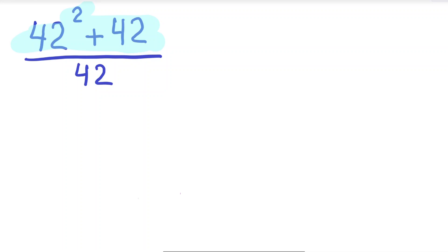A factor is something that is multiplied by the number to get that number. So what is the common factor between 42 squared and 42? Well, let's think: 42 is 42 times 1, right?